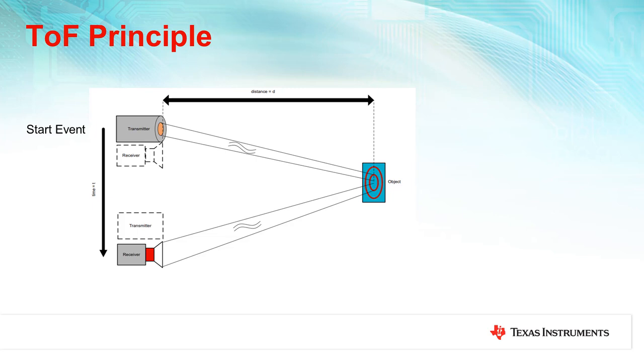Since the speed at which light travels through a given medium is constant, the distance to the target can be calculated by measuring the time delay between when the initial light pulse is sent to when it is reflected and received back. Once the reflected light has returned back to the receiver, this is denoted as the stop event. The time difference between the start and stop event is used to determine the distance to the object.